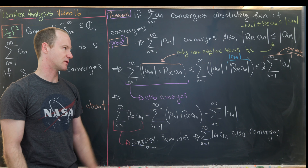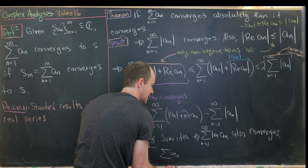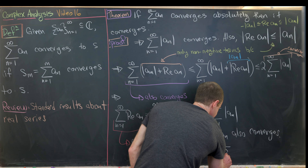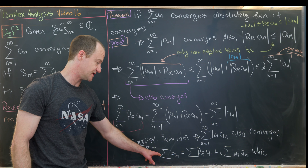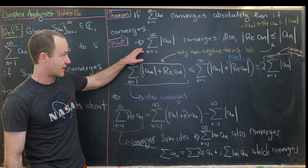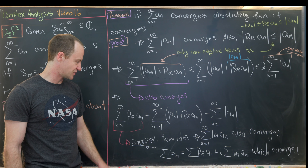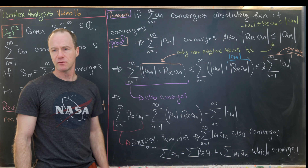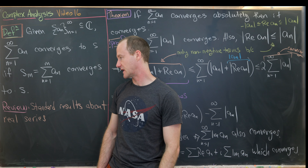We can write the sum of a_n as the sum of Re(a_n) plus i times the sum of Im(a_n). Since we're adding two convergent series, we get a convergent series, so the original series converges. We started with absolute convergence and ended with ordinary convergence. This wraps up the result — and remember to review standard real series results if needed.